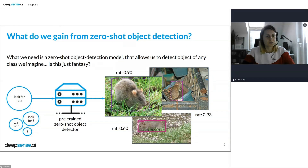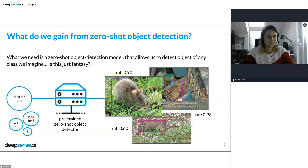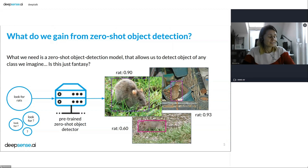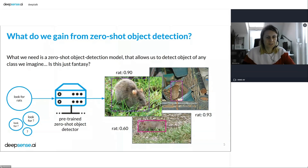There is a mouse in COCO but it's totally different from the mouse we need — it won't help us find rats. So what we need is a zero-shot object detection model — a model that will allow us to detect anything, any class we can imagine. And it's not just fantasy, because the rats detected on these images were actually detected by Grounding DINO, which I found almost accidentally during one of our internal projects and totally fell in love with it.